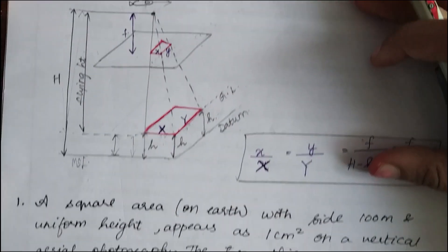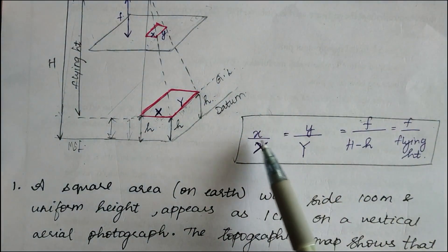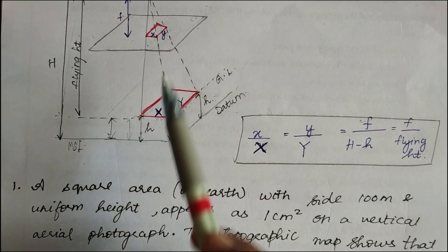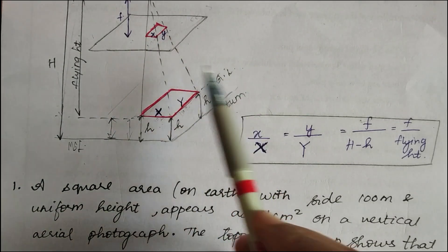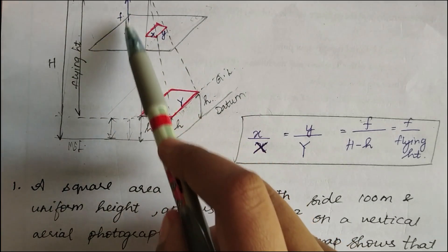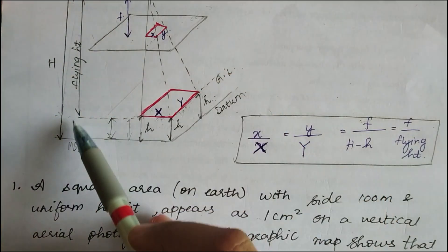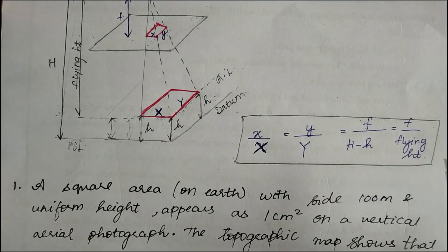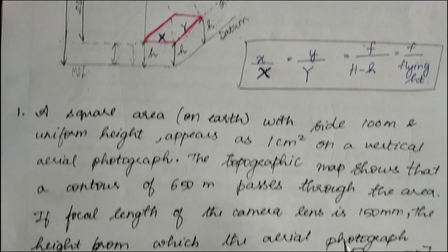From this we establish the formula: small x divided by capital X equals small y divided by capital Y, which equals the focal length of the camera divided by the flying height. This is the formula to keep in mind for vertical photogrammetry.